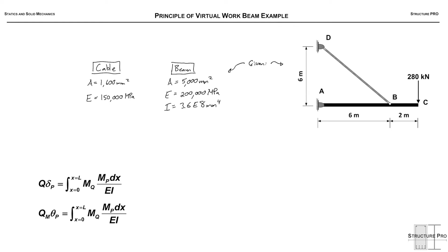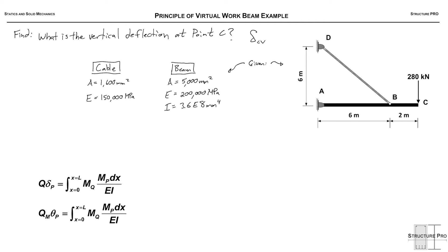Greetings and welcome to PVW — Principle of Virtual Work example. We're going to be applying the principle of virtual work to a beam assembly with a cable. We have a 280 kN point load at the far right side, location C, and we're asked what is the vertical deflection of point C, delta C in the vertical direction.